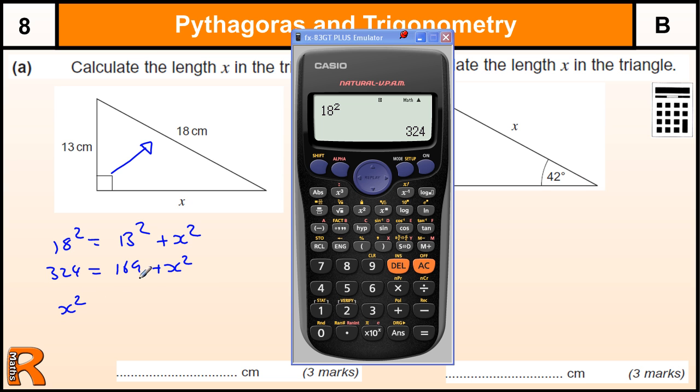So to find x squared I need to take away 169 from 324. That is a very common mistake when people do not realize they have got to take it away and they add it together. Because x is one of the short sides, this is the longest side, then we must take away.